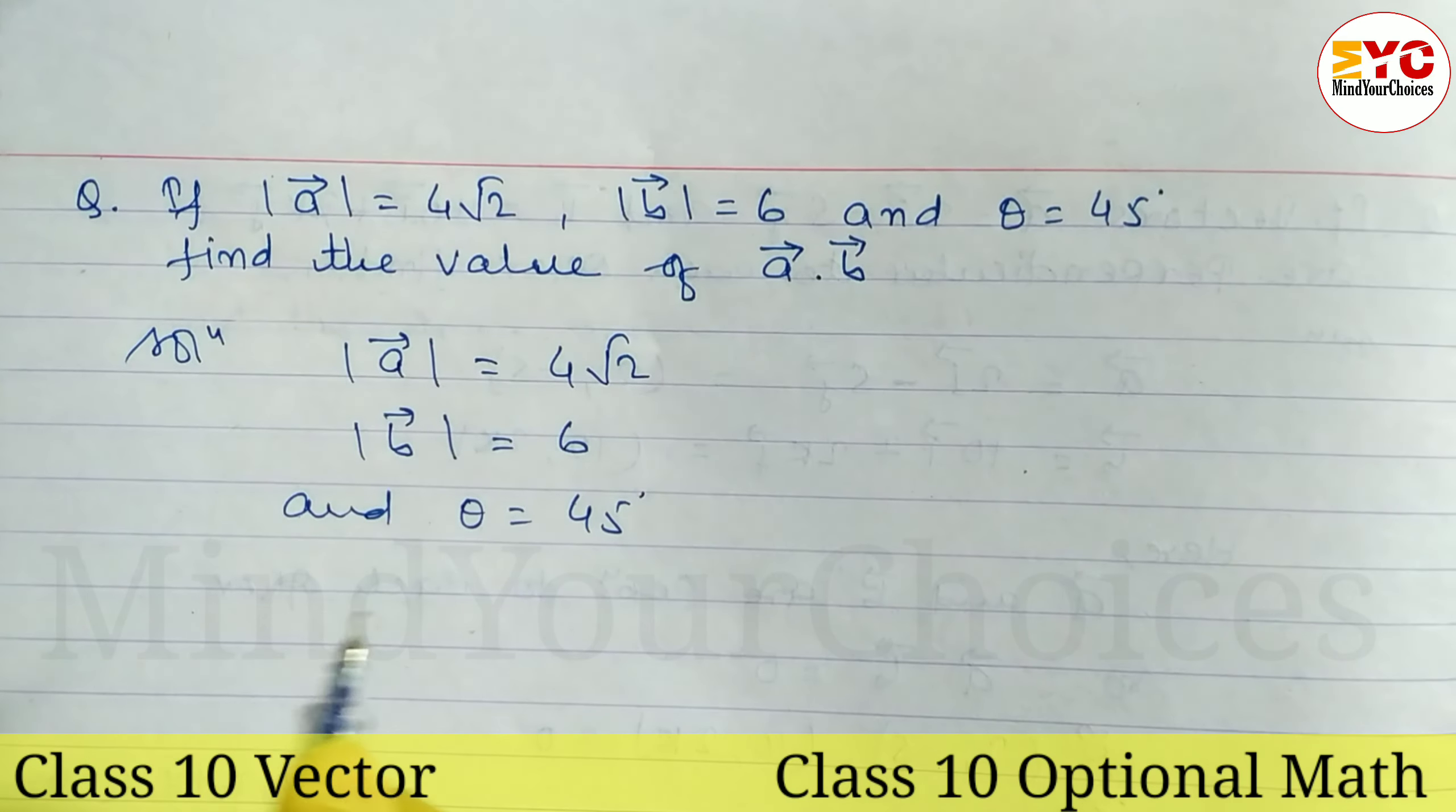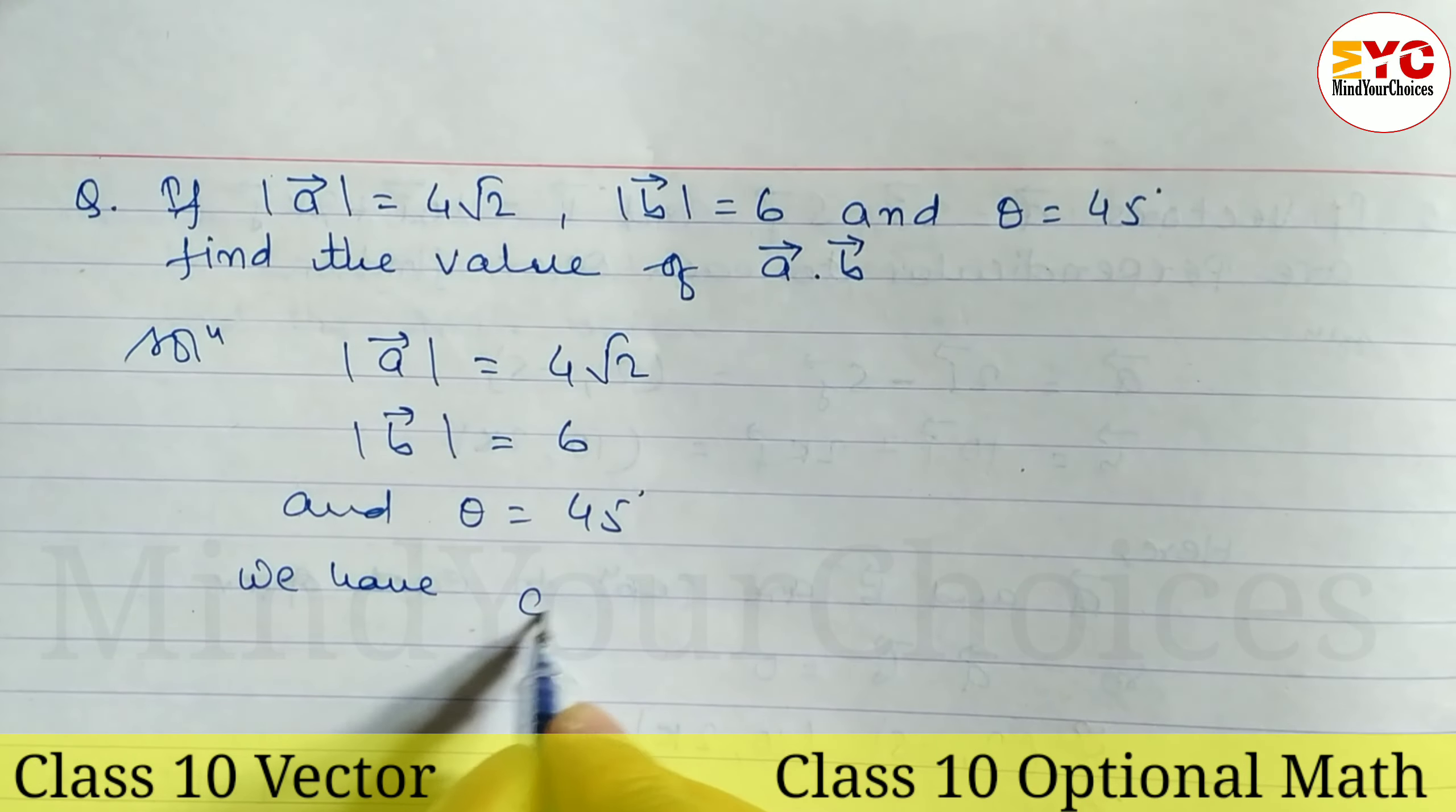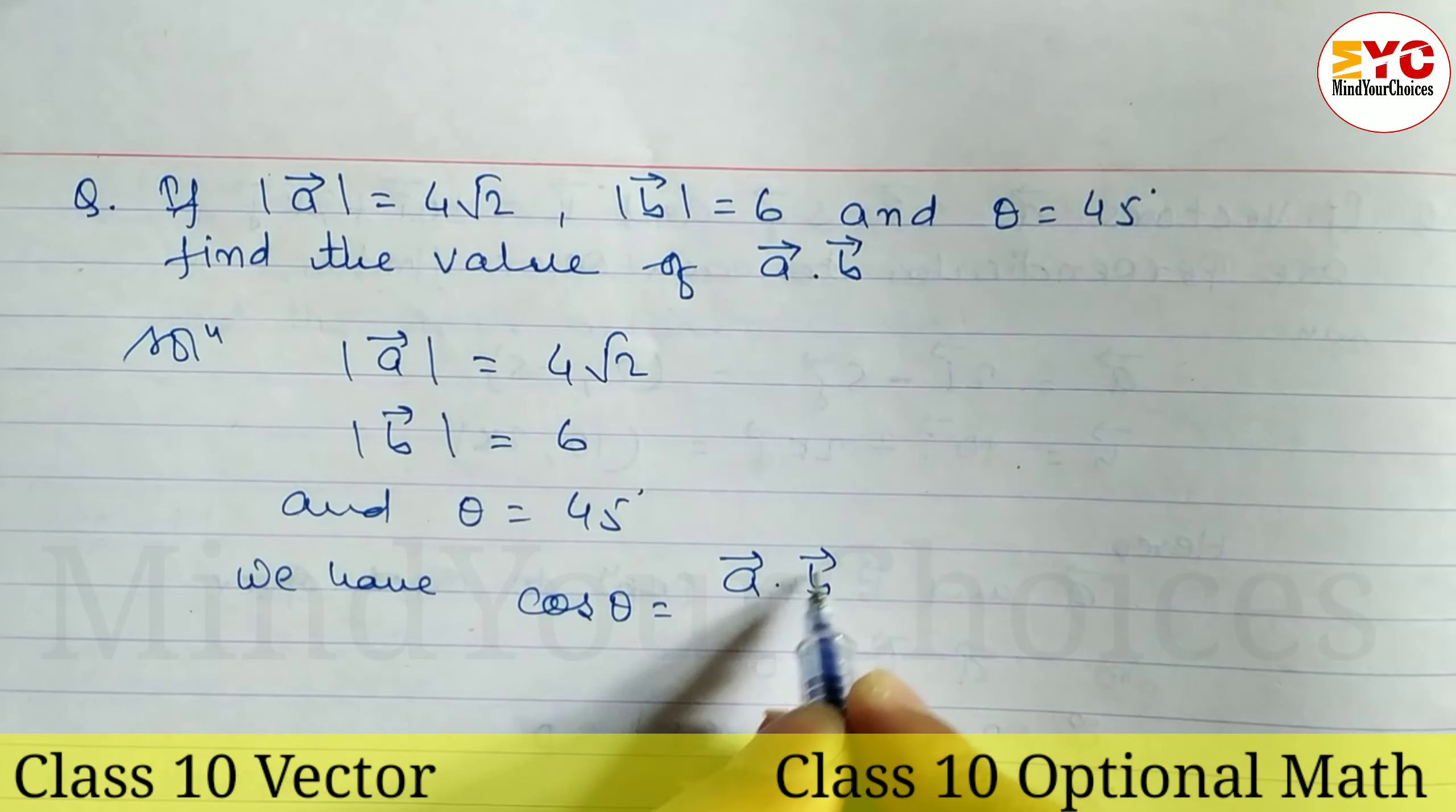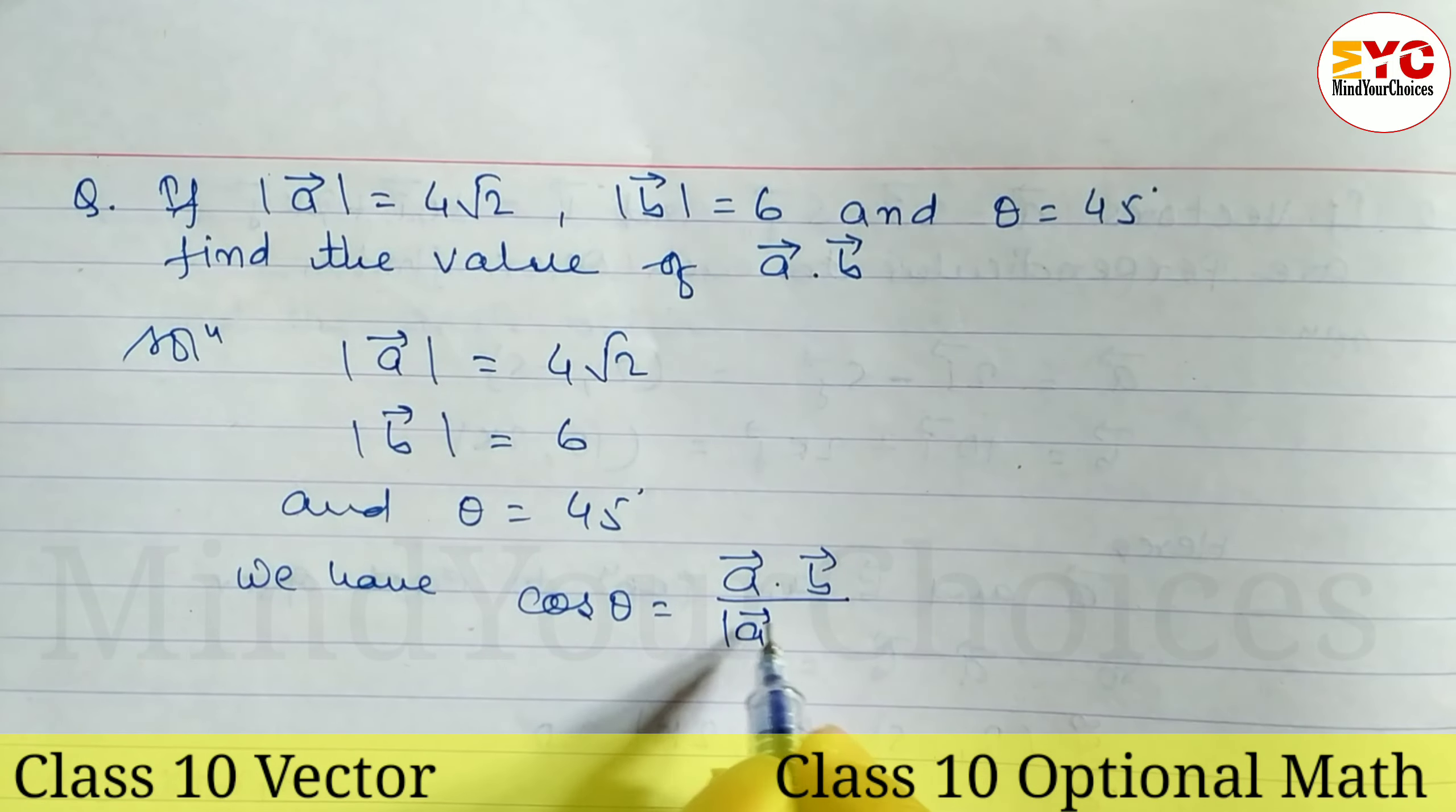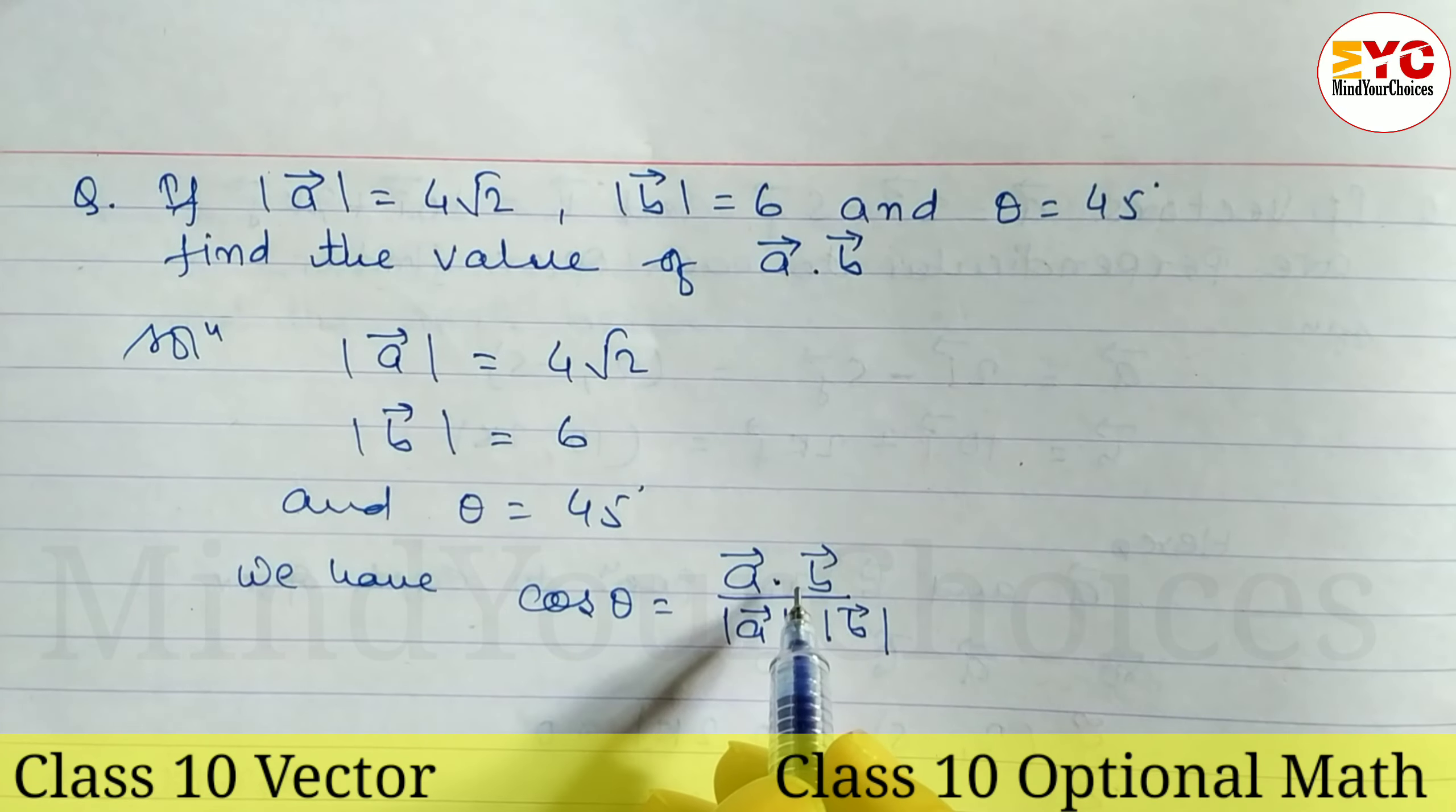We know that the value of cos theta is equal to a dot b divided by modulus a modulus b. So we have to use this formula. We're using the cos theta formula because we have to find out a dot b.